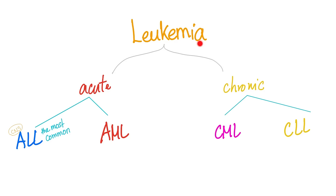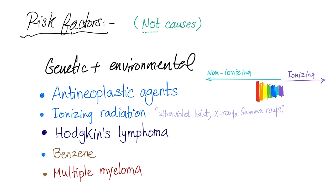Acute leukemias: ALL or AML. Chronic: CML or CLL. The risk factors of developing acute leukemia are both genetic and environmental — the philosophical argument of nature versus nurture. Risk factors include anti-neoplastic agents and ionizing radiation.